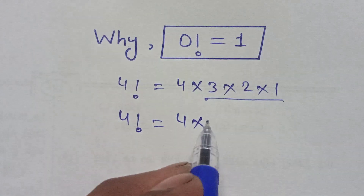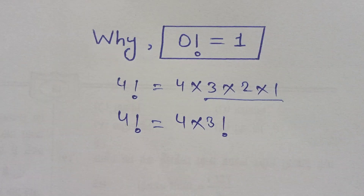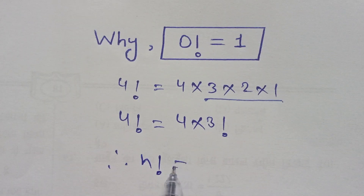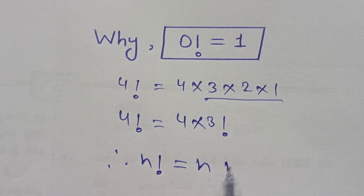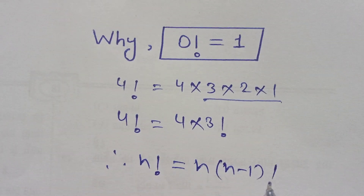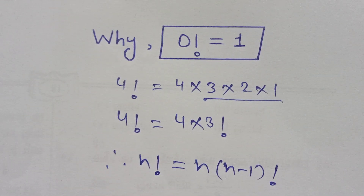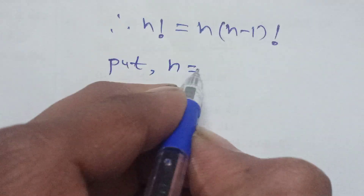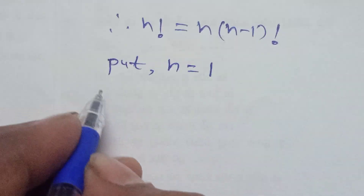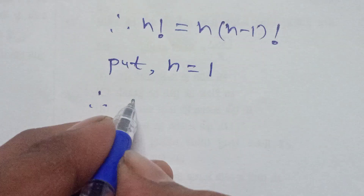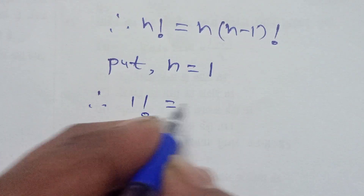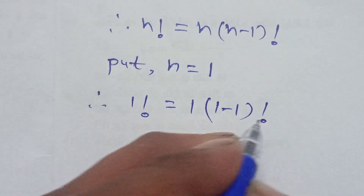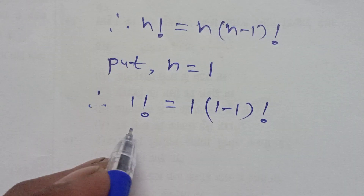Therefore, in general, n factorial is equal to n × (n-1) factorial. Substituting n = 1, we get 1 factorial is equal to 1 × (1-1) factorial.